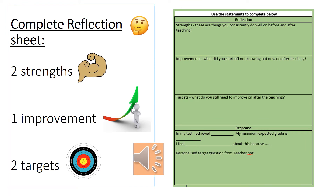So this is your green reflection sheet that we do in class. Obviously we haven't got green reflection sheets to give you, however I want you to make your own in your book. We need a strength, an improvement, and a target based on the test you did yesterday. If you want to extend yourself, obviously do two strengths and two targets.